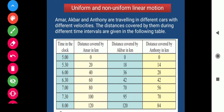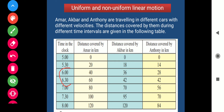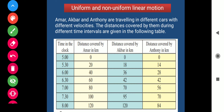Now we will see Agbar. In the first 30 minutes, the distance covered by Agbar is 18 kilometres. In the next 30 minutes, the distance covered by Agbar is again 18 kilometres. In the next 30 minutes, the distance covered by Agbar is only 6 kilometres. In the next 30 minutes, the distance covered by Agbar is 28 kilometres. In the next 30 minutes, the distance covered by Agbar is 25 kilometres.